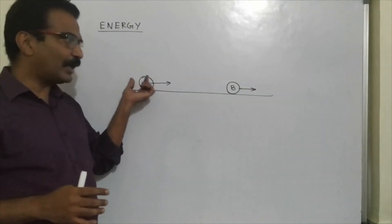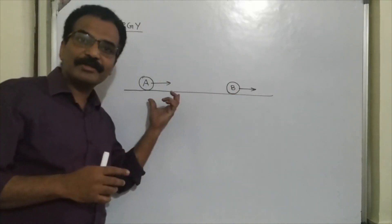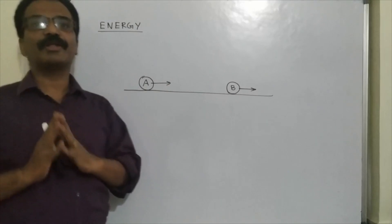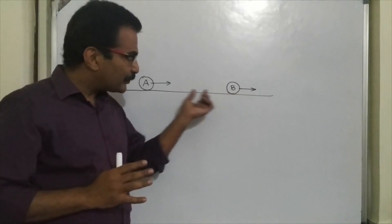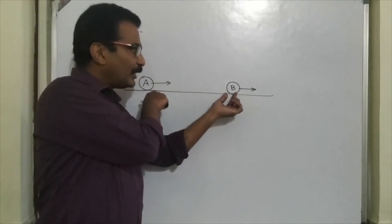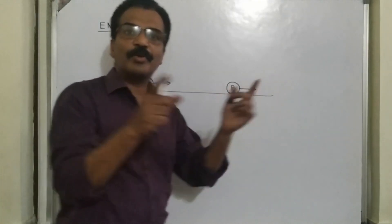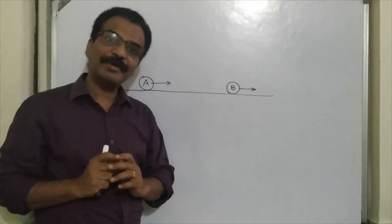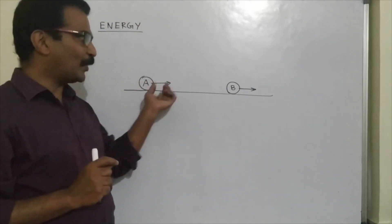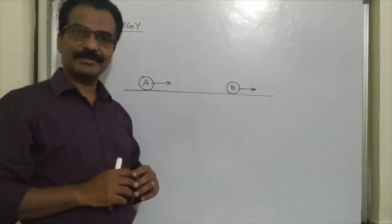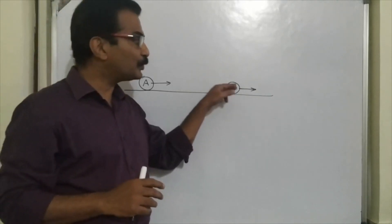So the moving body A can do work on body B, and we will say that the moving body A has energy. But at the same time, work is done by A on B, and as a result B starts moving. B is now moving, so naturally B has energy. When work is done by A on B, energy is transferred — the energy of moving body A is transferred to B.